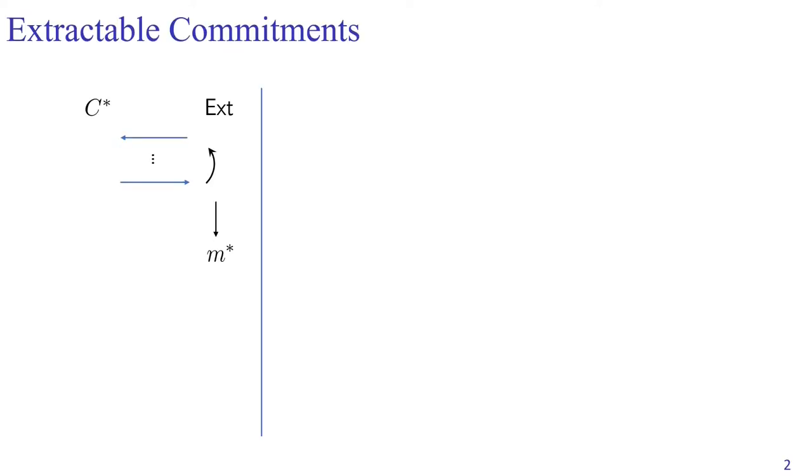Extractable commitments are very basic and important cryptography primitives. They require the existence of an extractor. Given the malicious committer C star, the extractor talks to C star, may potentially rewind C star, but at the end of the execution, the extractor is able to extract the value M star committed by the malicious C star.